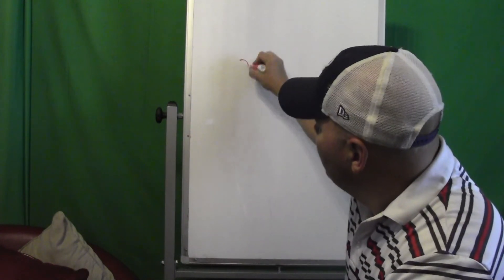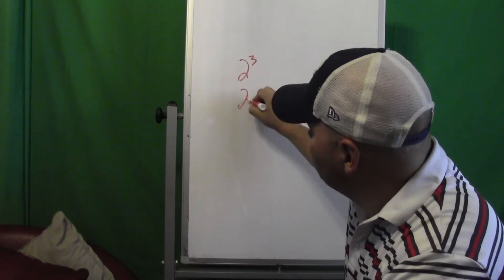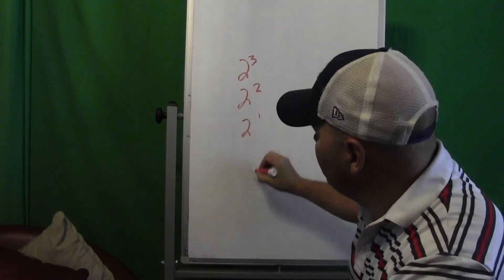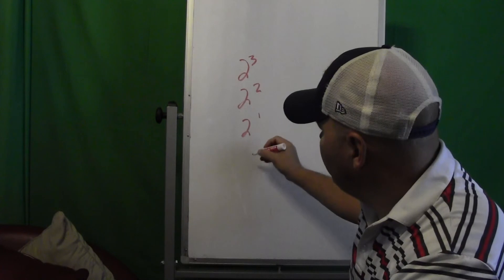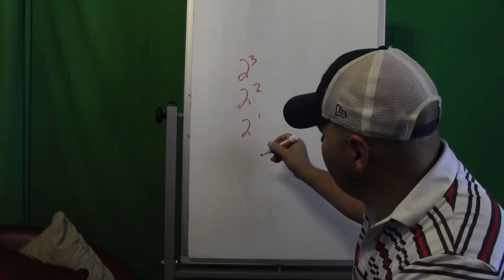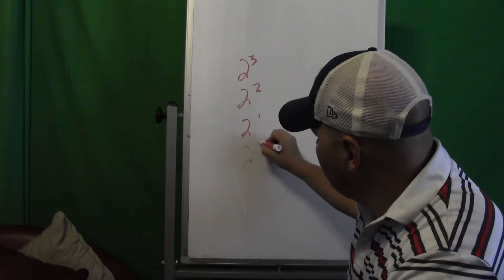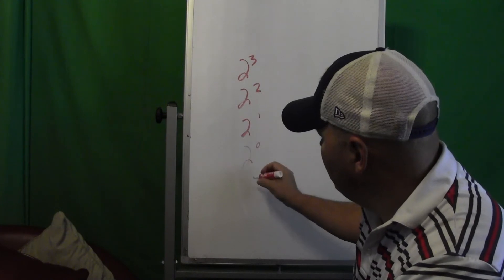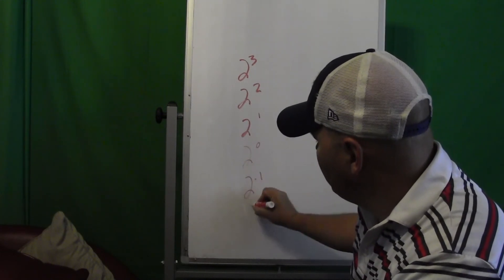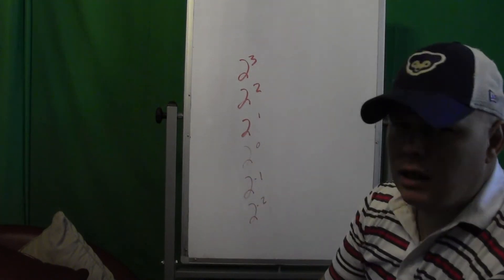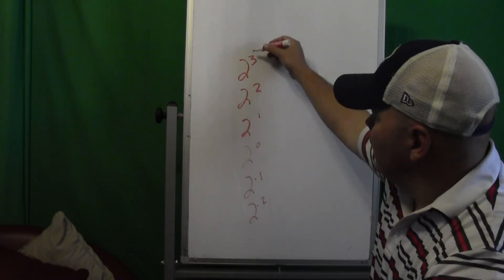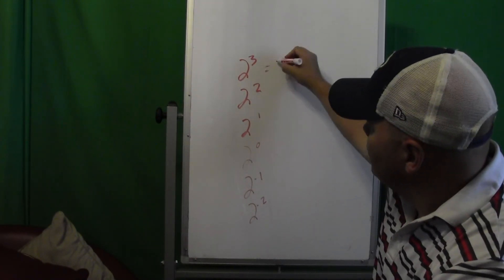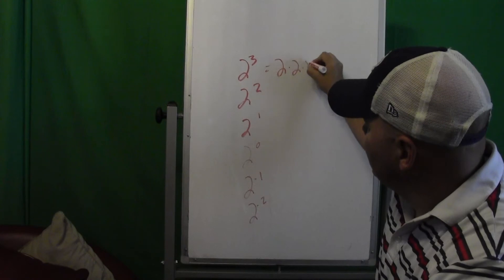2 to the third, 2 squared, 2 to the first. We'll go 2 to the 0, then 2 to the negative first, 2 to the negative second. So if we're looking at, that's my exponential notation, so in expanded form they look like this.